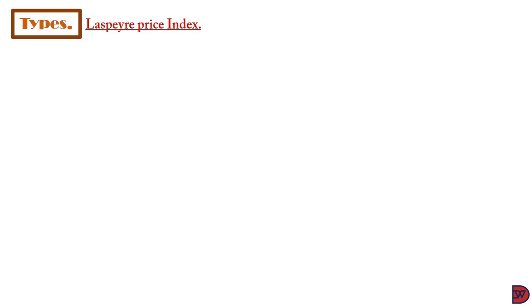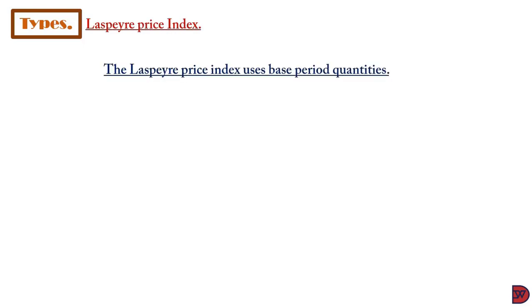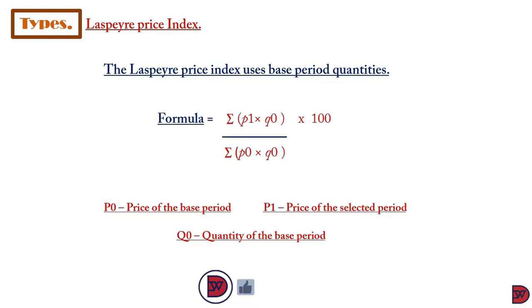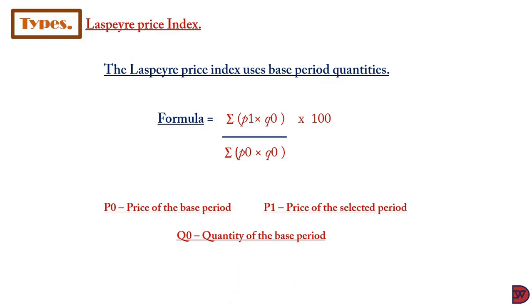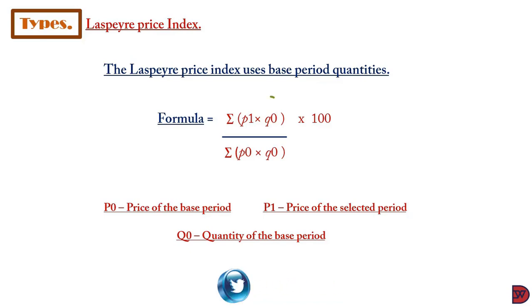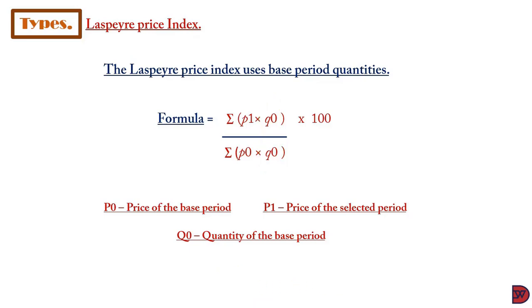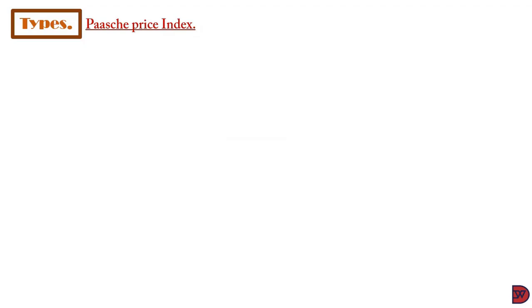There are further breakdowns of the composite index, unlike the simple one. The first is the Laspeyres price index. This index measures the change using the base period quantities. The formula is the summation of the selected price multiplied by the base quantity, all divided by the summation of the base price multiplied by the base quantity — and all quantities used are from the base period. This is then multiplied by 100.